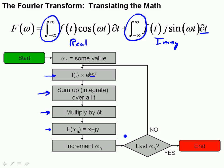We go to the next omega, we multiply, we integrate, we multiply by delta t, come up with another complex number.